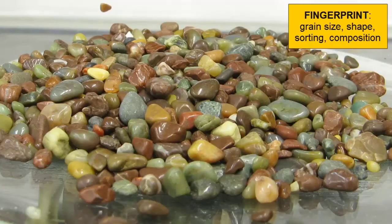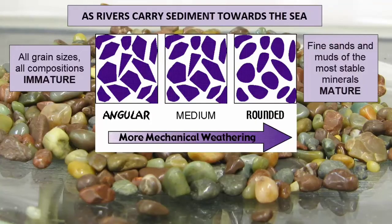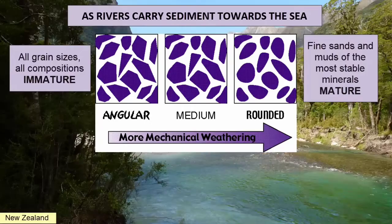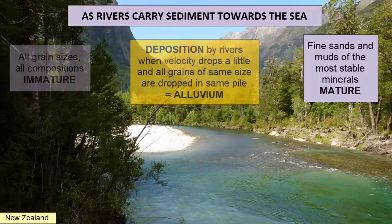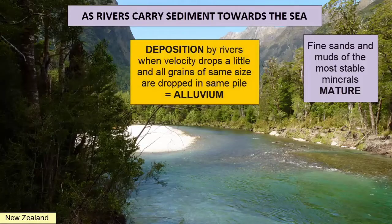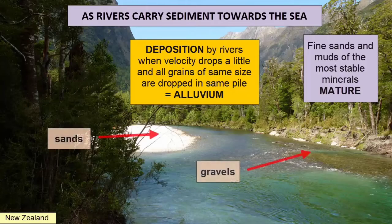We can describe those characteristics and use them to interpret the travel history and maturity of the sediment. As sediments migrate downhill toward low-lying areas, especially if carried by running water, they knock about and get smaller and rounder. If deposited by waves or rivers, the gradual slowing of the water means only grains no longer able to be carried due to the drop in velocity will settle out. So all the grains in a given pile of river sediment (alluvium) will be the same size, and all the easily dissolved and hydrolyzed minerals will be gone, leaving only the most stable ones.